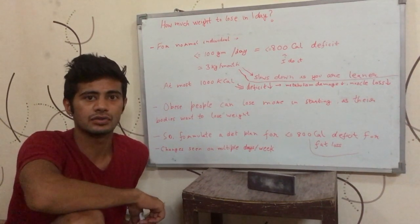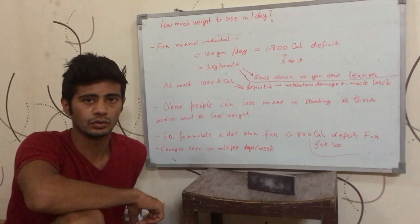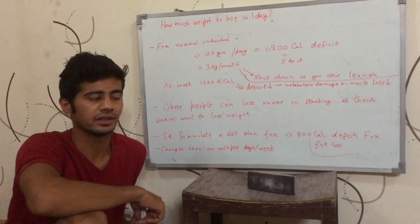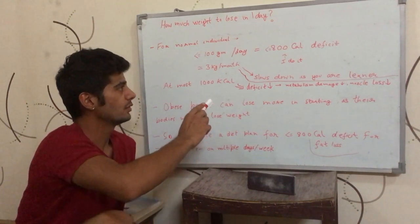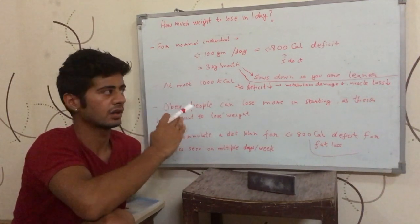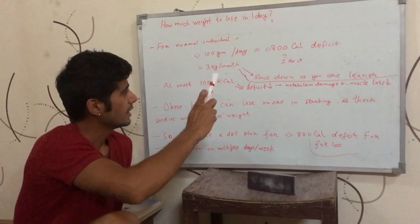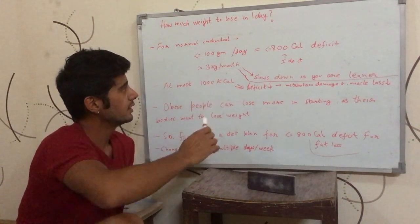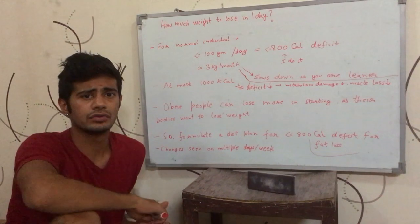Then your body starts to burn muscle to get energy from it. So it is better to stay in the safe range, staying in a calorie deficit of 800 calories or lesser.